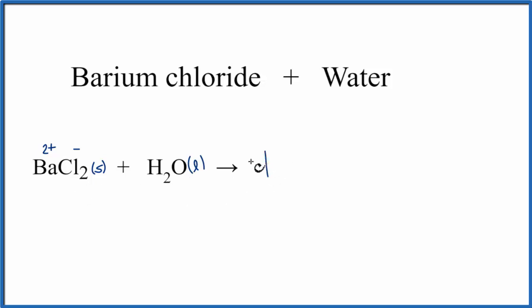So we get Ba2 plus, plus Cl minus. Since we have two of these chlorines here, we do need to put a coefficient of 2 over here to show that we have these two chloride ions. So we have 2 here and 2 here, so the equation's balanced.